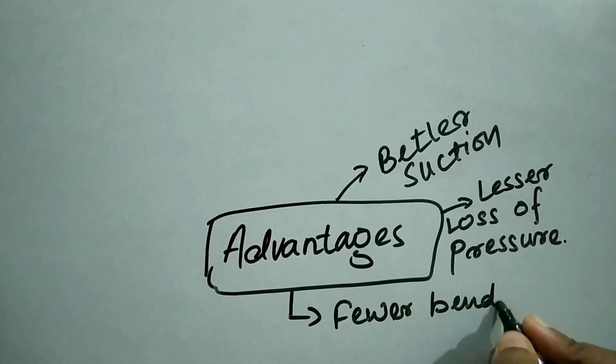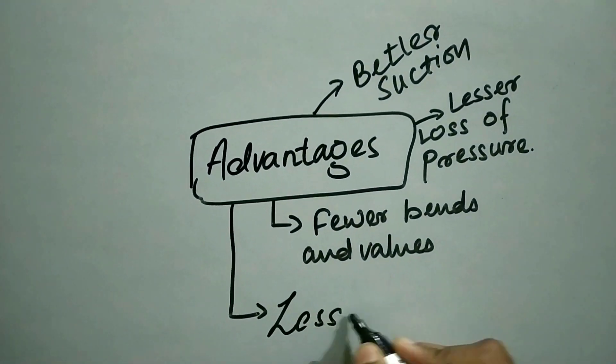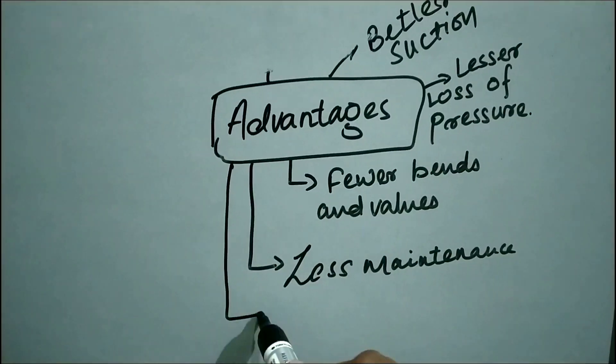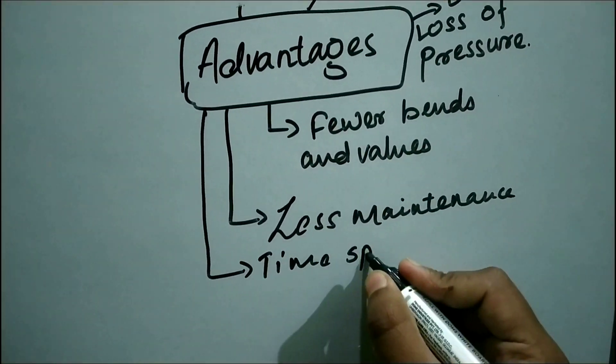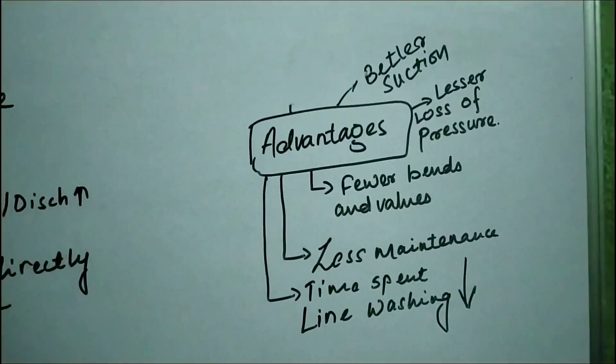The disadvantages of this system are that due to fewer walls, leaks are very difficult to control, and many grades cannot be carried because wall segregation is not provided in this type of system.